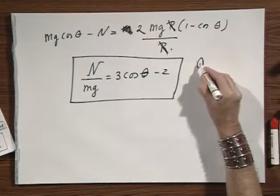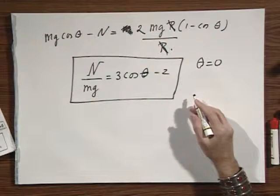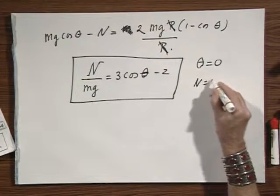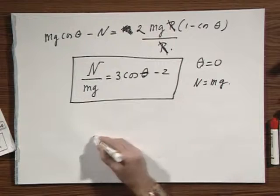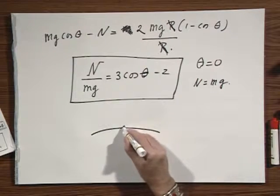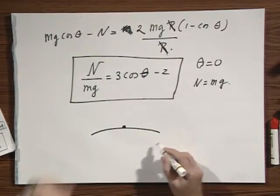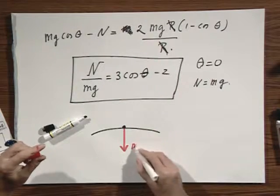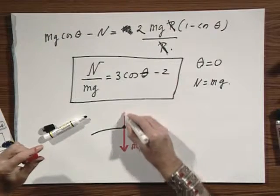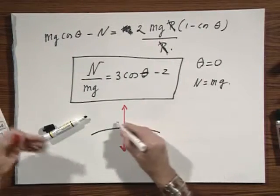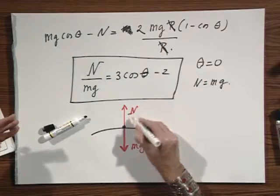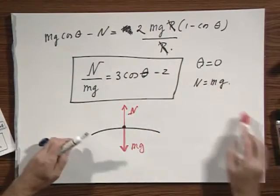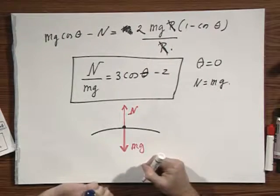Let's stick in this equation theta equals zero. Three minus two is one, so you find N equals Mg. Well, that's rather obvious. When she is sitting right on top of the igloo, then her mass, attracted by the Earth, Mg, and there is no velocity. She is sitting still. So the normal force that she experiences from the igloo better be exactly equal to Mg. So that is very pleasing.